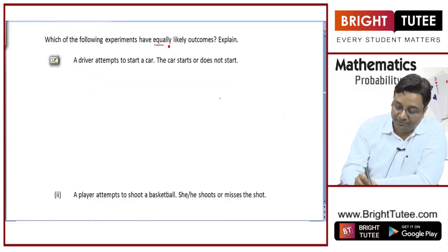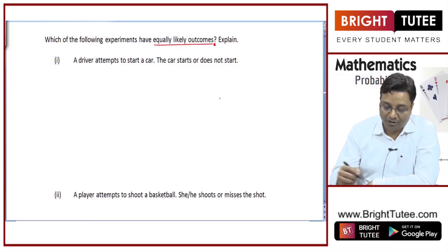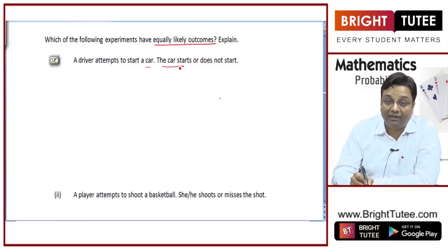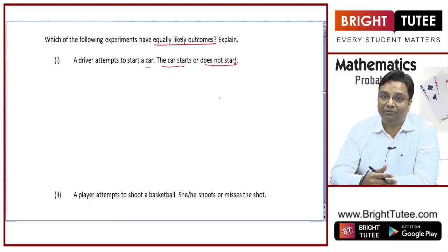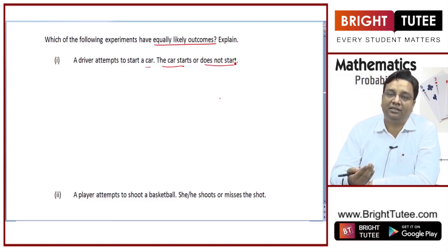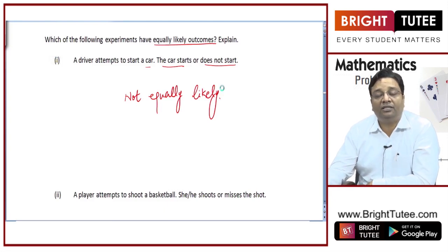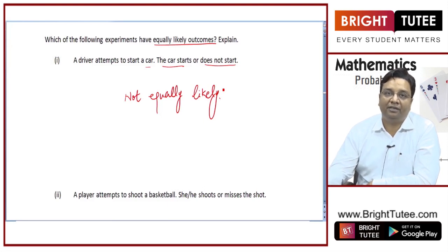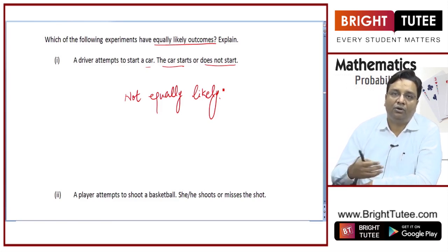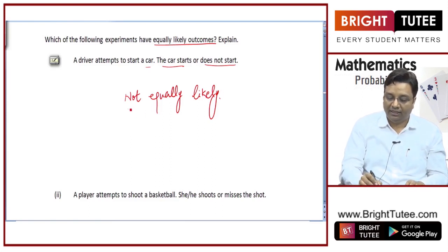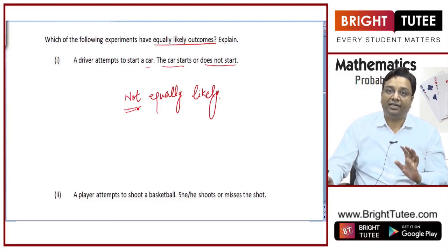Now we will talk about equally likely outcomes. Which of the following experiments have equally likely outcomes? A driver attempts to start a car — the car starts or it does not start. We cannot say these two events are equally likely. It depends on the condition of the car: if the car is brand new it may start every time, if it is in bad shape it may not start. So these are not equally likely.